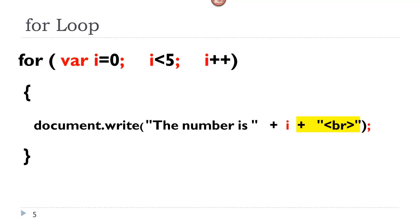Concatenating that with a break. So essentially, we are going to be writing to the page 'the number is zero', one, two, three, four. We are going to have five statements, starting at zero, ending with four. So here is how this loop works. First time around, var i equals zero — and we don't increment it really until the second time, that's just the way it works. So the first time around, i is zero.